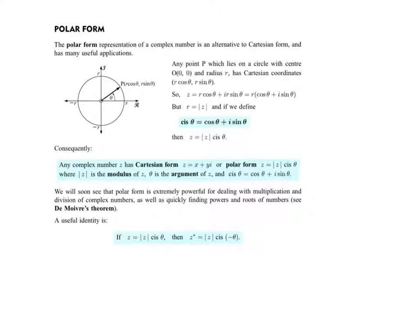So here's how our book talks through that. They point out to us that this point P has an x-coordinate of the radius times cosine of theta, and then the y value is the radius times sine of theta. And so they use this shorthand, cis theta is equal to cosine theta plus i sine theta, and so then the complex number can be written as the modulus of z times cis theta.